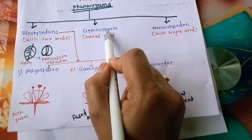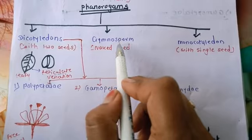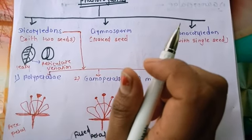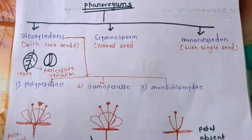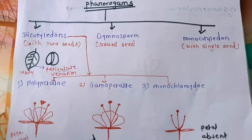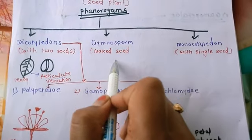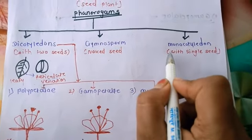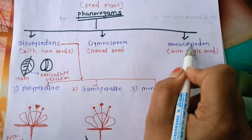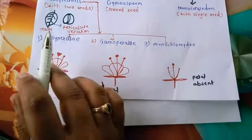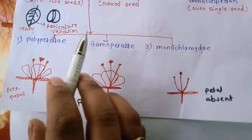Gymnosperm means naked seed — seeds that we can see easily with our eyes. The third type is monocotyledon. Mono means single and cotyledon means seed, so monocotyledon has a single seed. Dicotyledons have three types: polypetaly, gamopetaly, and monoclamide.